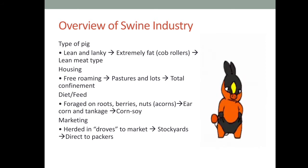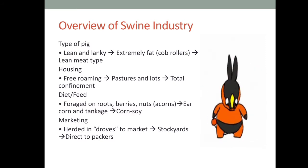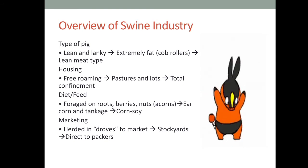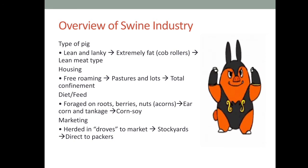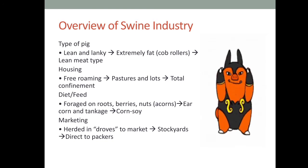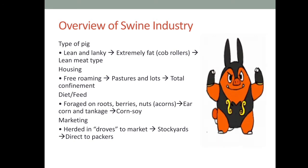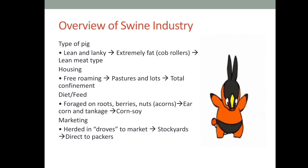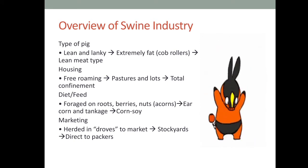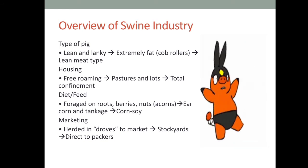Now let's talk about the evolution of the swine industry. As a type of pig before, swines were very lean and lanky. They then extremely evolved into very fat pigs, and discovered that pigs are capable of getting very fat. Up until now, we are producing the lean meat type, whose sole purpose is to produce good quality meat. The housing before was free roaming, until it developed into pastures and lots, and finally into total confinement with all the facilities needed for swine production.